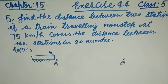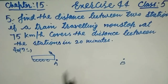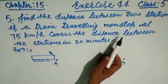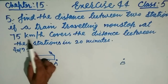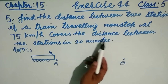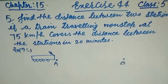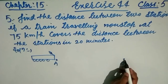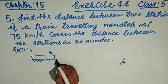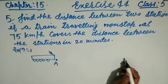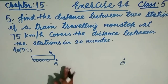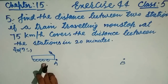Question number five says: find the distance between two stations if a train traveling non-stop at 75 kilometers per hour covers the distance between these stations in 20 minutes. Here, there is one station named A and another station B, and the train is traveling from A to B.